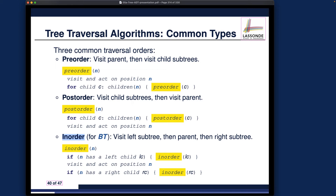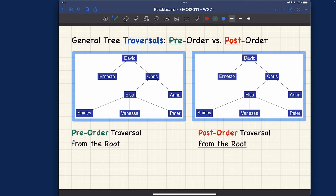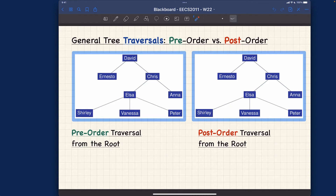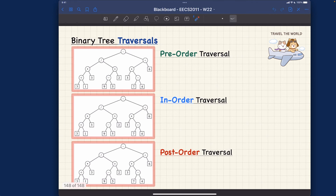Assuming you already properly memorized the principles, let's move on to exercises. I have two example trees to go over. The first one is a family tree we're familiar with. For this tree, I only listed exercises for pre-order and post-order. We cannot do in-order traversal on this tree because it's more like a general tree — it's not binary. For example, Elsa has more than two child nodes, so in-order traversal is only applicable to binary trees.